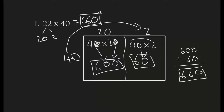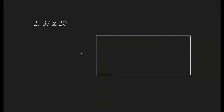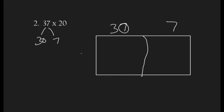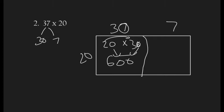Now let's go to the second question. Our second question is 37 times 20. Again we're going to separate 37 into 30 and 7. Let's separate the box — this part is going to be 30 and this part is going to be 7. The 20 is going to come here. Now 20 times 30: 2 times 3 is 6, and then we're going to bring the zeros down, so we get 600.